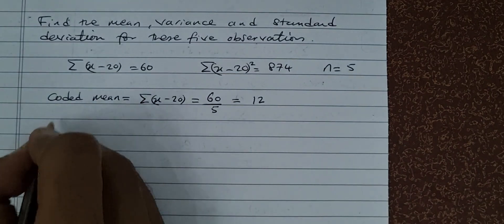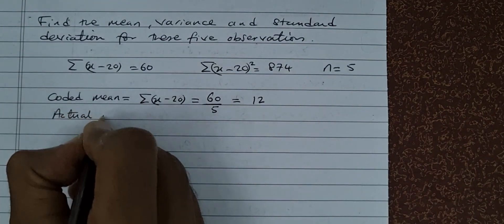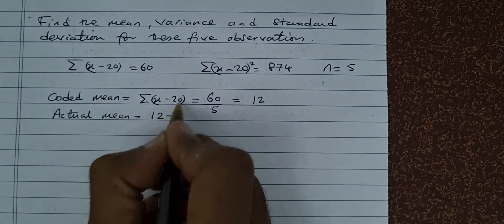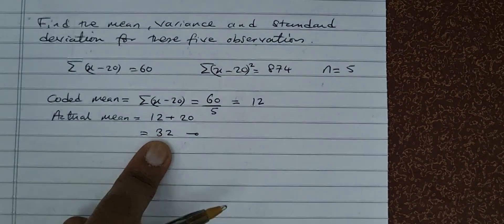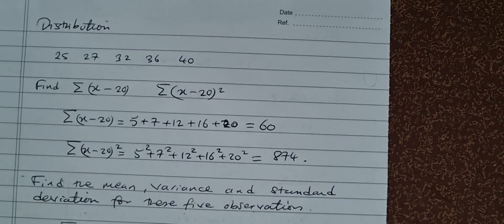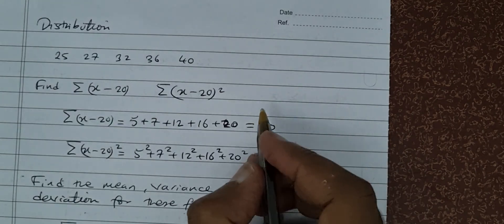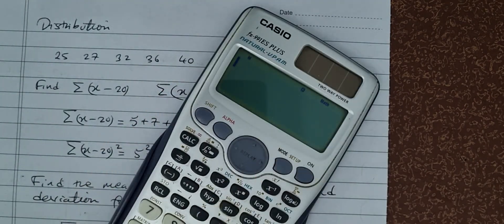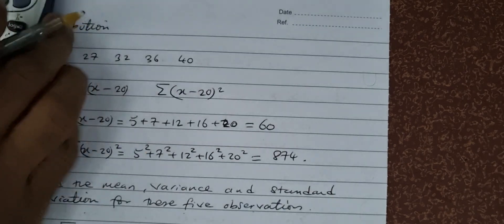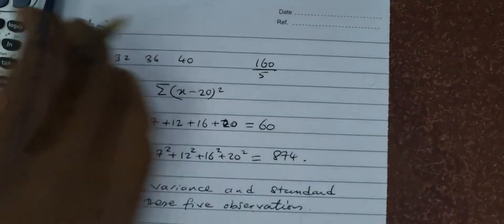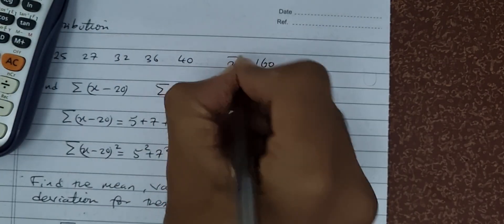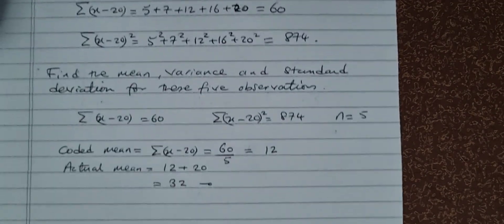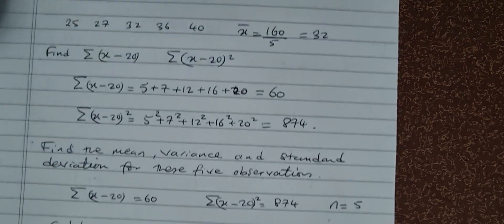But you want the actual mean. The actual mean is going to be equal to 12 plus 20, so basically we're looking at 32. Suppose you want to check this from the original values — if you were to find the mean of these, you just add them up: 25 plus 27 plus 32 plus 36 plus 40, you're going to get 160. So you take 160 divided by 5 and you get the mean as 32. So the mean of x is 32, exactly the same as what we found here.